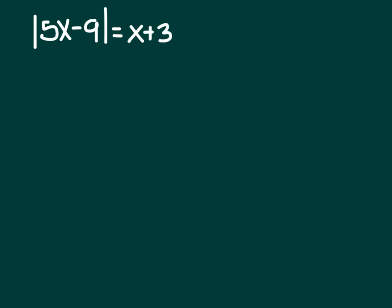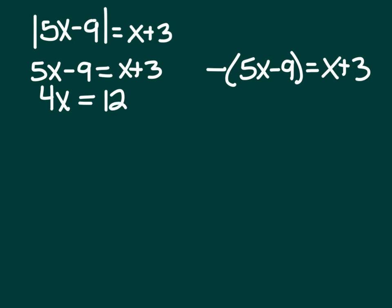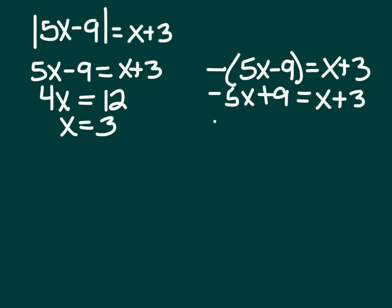Next example: the absolute value of 5x minus 9 equals x plus 3. This one has an x outside the absolute value as well. The absolute value is already isolated, so we split into two equations. Positive version: 5x minus 9 equals x plus 3. Subtracting x and adding 9 gives 4x equals 12, so x equals 3. Negative version: negative (5x minus 9) equals x plus 3, which distributes to negative 5x plus 9 equals x plus 3. Subtracting x from both sides gives negative 6x, and subtracting 9 gives negative 6, so x equals 1.